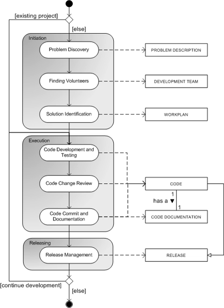Resources for publicizing a project include software directories and release logs, the Free Software Directory, Linux Weekly News, and IBM DeveloperWorks. Related topics include Government Open Code Collaborative, Open Source Software Security, Software Development Process, Release Management, Software Engineering, and Meta Modeling.